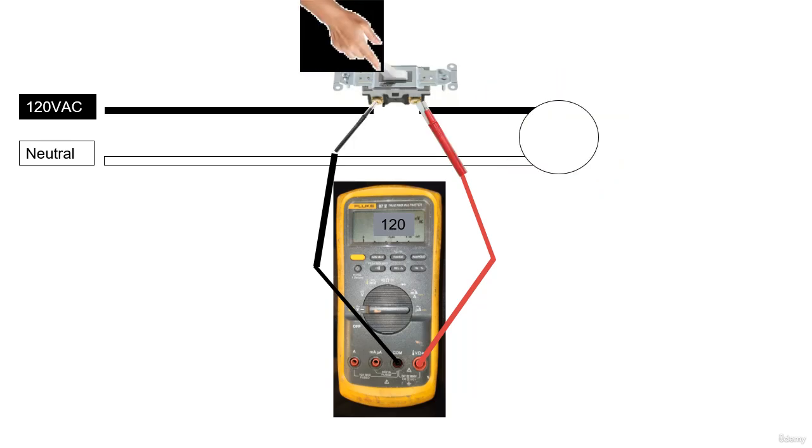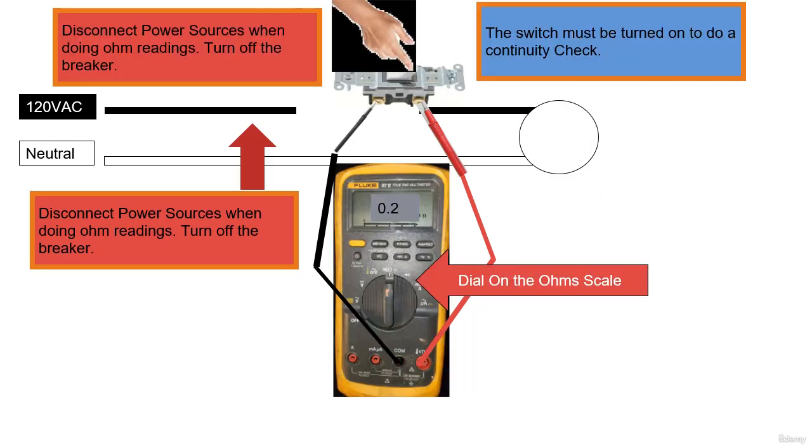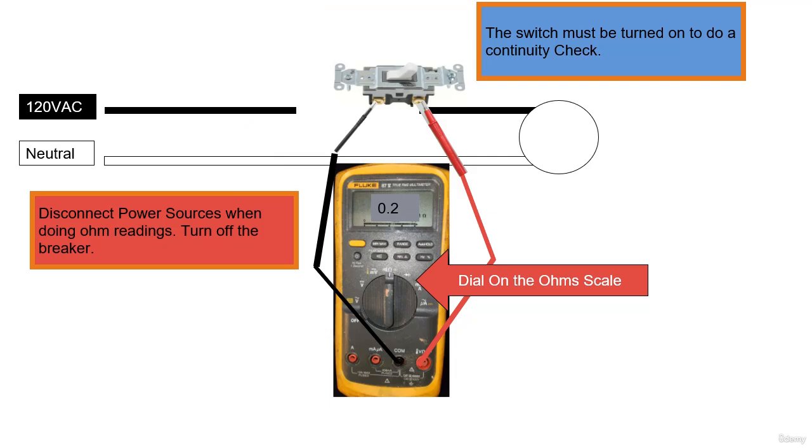If the switch is open, turned off, then I should read the full voltage difference. If I want to check continuity, I read from terminal to terminal, the switch should read zero to half ohm. Anything higher than half ohm on a closed switch, then the switch is bad.